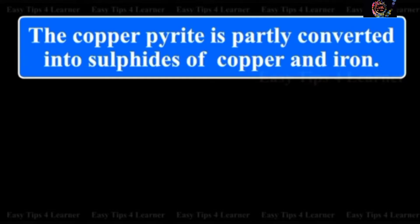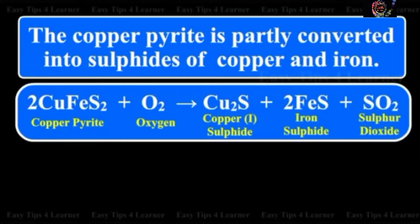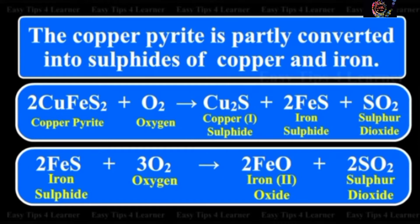The copper pyrite is partly converted into sulfides of copper and iron: copper pyrite plus oxygen gives copper sulfide plus iron sulfide plus sulfur dioxide. Iron sulfide plus oxygen gives iron(II) oxide plus sulfur dioxide.